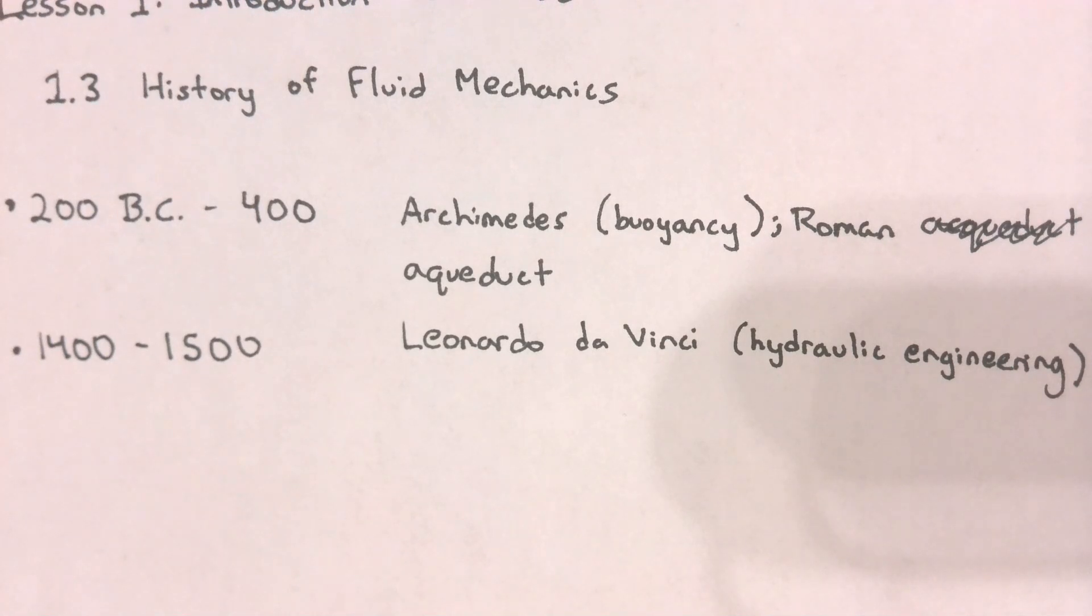However, it was in the 1400s where a man by the name of Leonardo da Vinci, which you can recognize as that famous engineer, philosopher, and artist, gave birth to the field of hydraulic engineering. Leonardo da Vinci designed and developed the chambered canal lock.